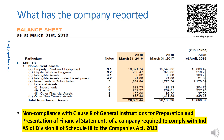Para 2.1A of Ind AS 109 scopes out investments in subsidiaries that are measured at cost. It may be noted that the very fact that Ind AS 109 on financial instruments had to scope out such investments means those investments meet the definition of financial instruments. Had Para 2.1A of Ind AS 109 not scoped out investments in subsidiaries measured at cost, there would arise inconsistency between Ind AS 27 and Ind AS 109. Thus, investments in subsidiaries that are measured at cost in accordance with Para 10 of Ind AS 27 are financial assets, but scoped out of Ind AS 109.